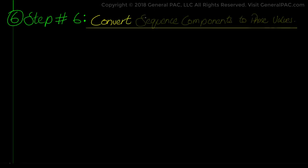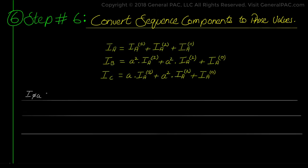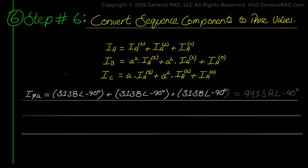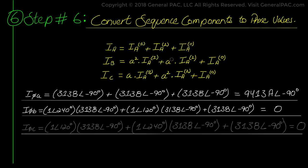As the final step number 6, we convert these sequence component values to phase current values by plugging in the sequence components and the A operators into the familiar equations. For line A current on the 13.8 kV side, we get 9413 amps at the angle of -90 degrees. For phase B line current on the 13.8 kV side, we get 0 amperes. For phase C line current on the 13.8 kV side, we also get 0. This matches exactly what we assumed in our video on single line to ground fault derivations.